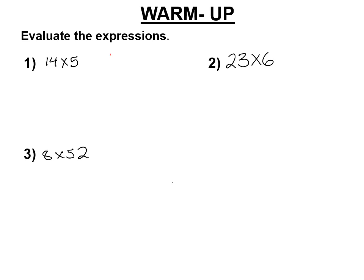So 14 times 5. I'm going to put the one with more digits on the top and do that. 5 times 4 is 20. That 0 has to go right under the 4 and 5, and then we carry that 2. 5 times 1 is 5, plus 2 is 7. So we say 14 times 5 is 70. So do the rest of them.